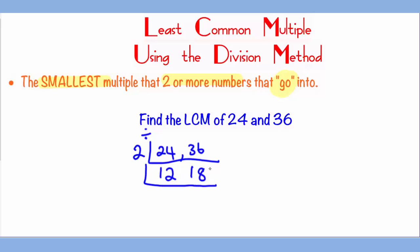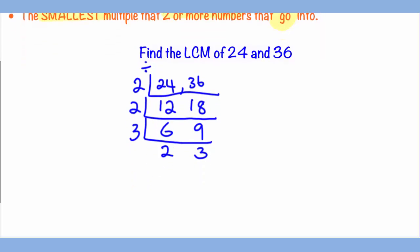You continue. 12 and 18 are even, so I know 2 goes in again, leaving you 6 and 9. 3 goes into 6 and 9, leaving you 2 and 3. Since nothing goes into 2 and 3, that's it, you're done.